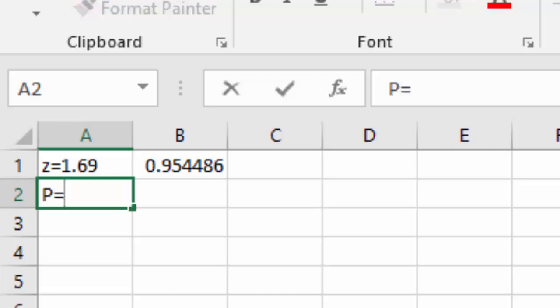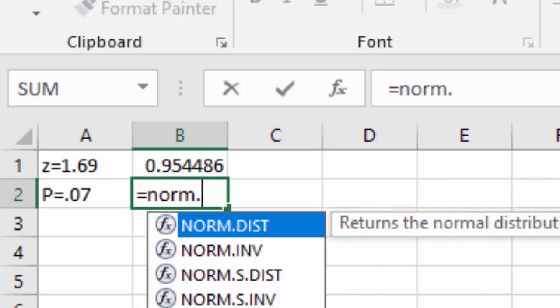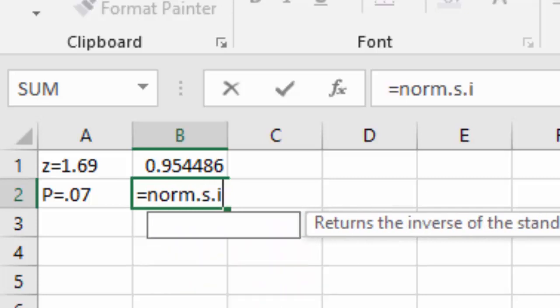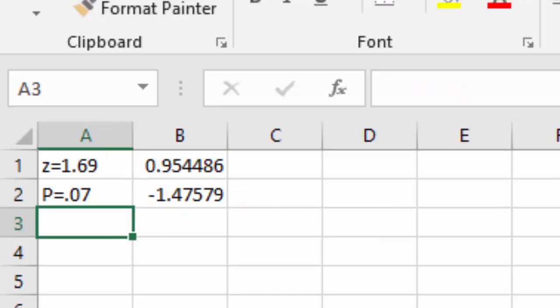We need to know what x value goes with 0.07. We want a probability that's equal to 0.07, so we'll say equals norm.s.inv for inverse. And that allows us to type in the probability of 0.07, and then they'll give me a z value of negative 1.48. Let's round to two digits, negative 1.48.